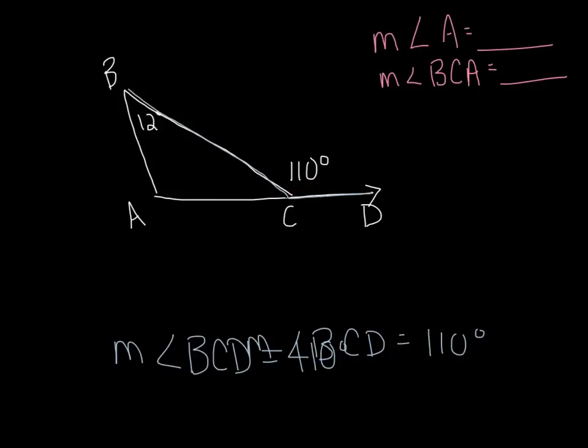We know that angle B is 12 degrees, so I can say 12 degrees plus whatever angle A is, is going to equal 110 degrees. So to find A, we just do 110 minus 12, and we find out that the measure of angle A is 98 degrees.